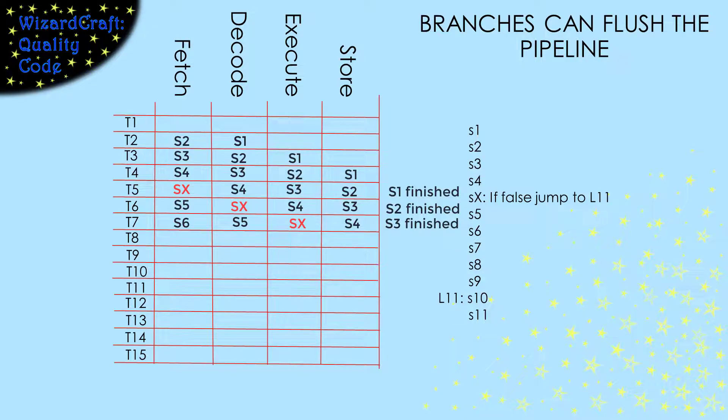Now, suppose that the condition says we're supposed to make that jump. Then the next statement that we need to execute isn't the S5 that's in the pipeline. It's S10, which we haven't even started. Everything that is in the pipeline has to be thrown away. That's called flushing the pipeline, and it causes a pretty big disruption in execution. Now, we're going to have to wait for the pipeline to refill before we start getting an instruction every cycle again.